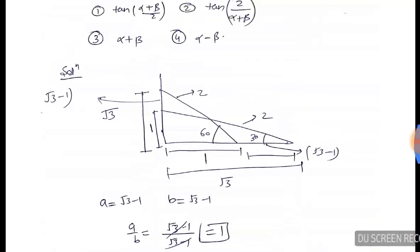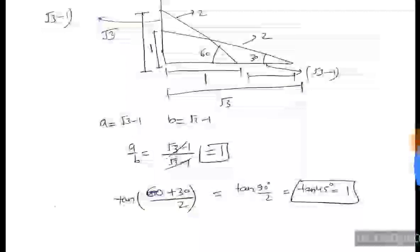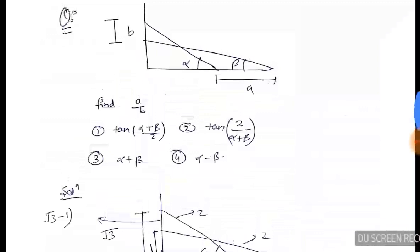With α = 60 and β = 30, we get (α + β)/2 = (60 + 30)/2 = 90/2 = 45. So tan 45 = 1. This confirms A by B = tan(α + β)/2 — and that is the correct option.